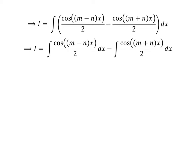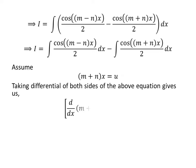Let us solve the integral of cos((m + n)x) upon 2 with respect to x using the substitution method. Let us assume (m + n)x is equal to u. Differentiating both sides gives us the derivative of (m + n)x with respect to x, times dx, is equal to du.